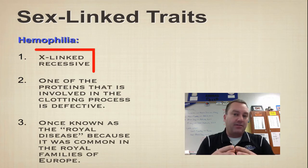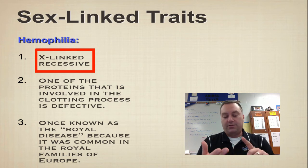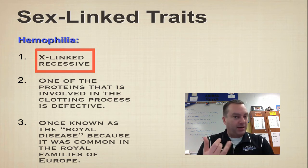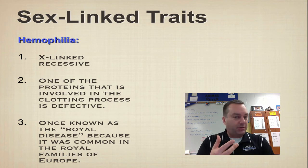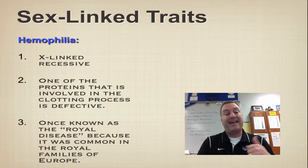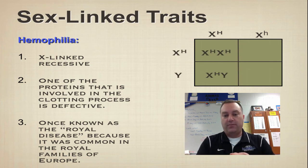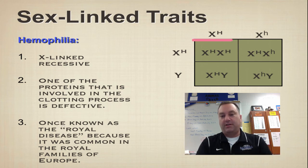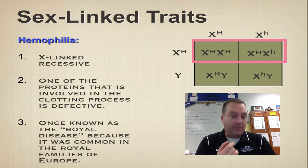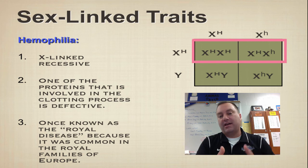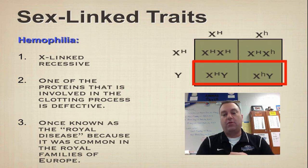Hemophilia is another sex-linked recessive trait. Once again, mothers can be carriers and males typically show the trait. The only way a female can have the trait is if she inherited an allele from her dad and one from her mom. In this Punnett square, we have a female carrier and a normal father. Half of the females are carriers, and in this case half of the boys are going to have the trait, so none of the girls would actually have hemophilia.